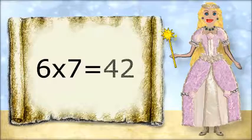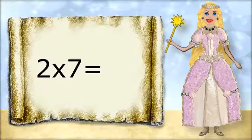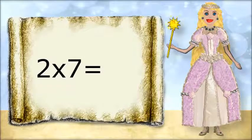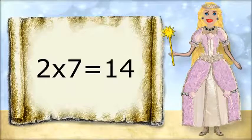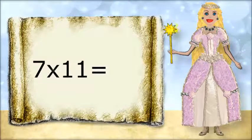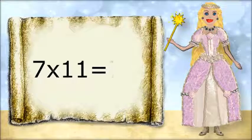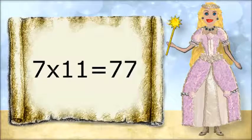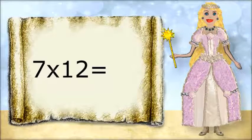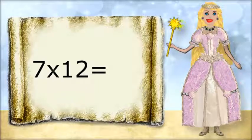6 times 7 equals 42. 2 times 7 equals 14. 7 times 11 equals 77. 7 times 12 equals 84.